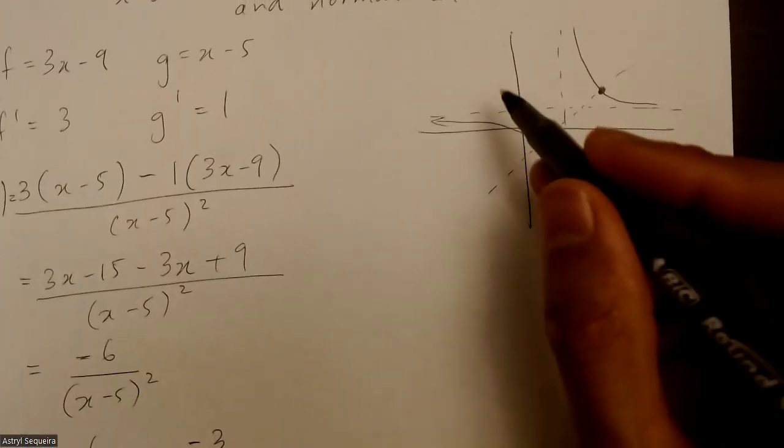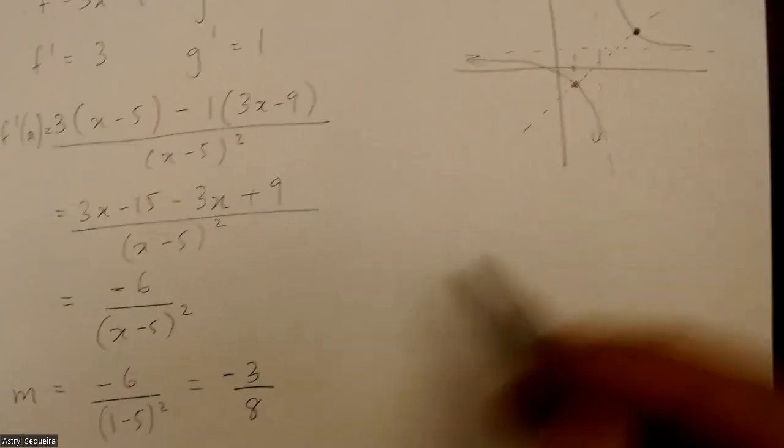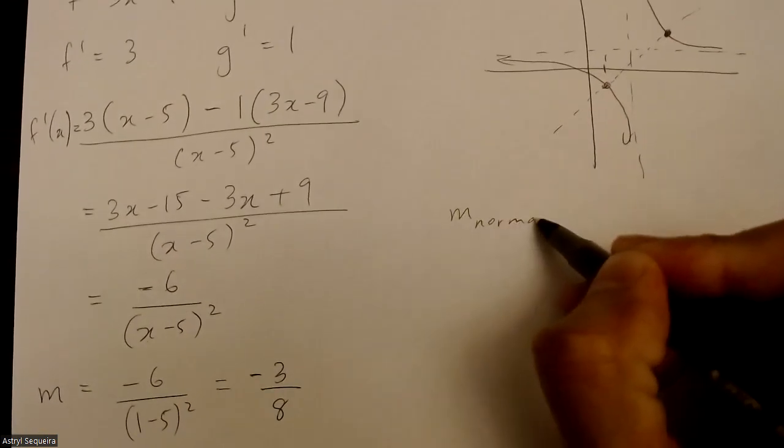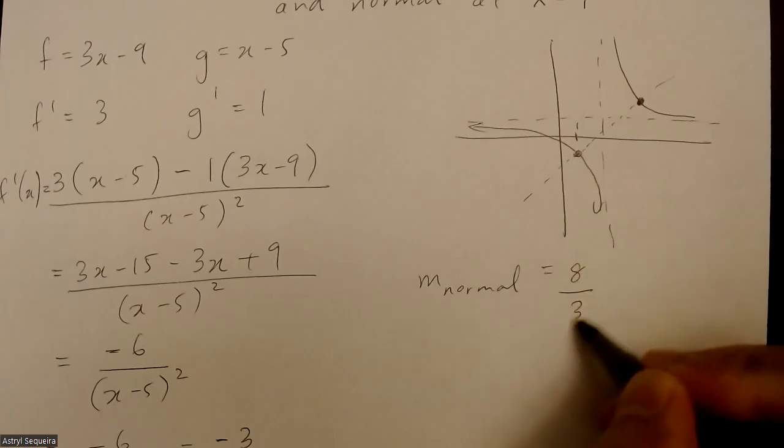So the slope of my tangent line here is negative 3 over 8, which means the slope of my normal is just 8 over 3.